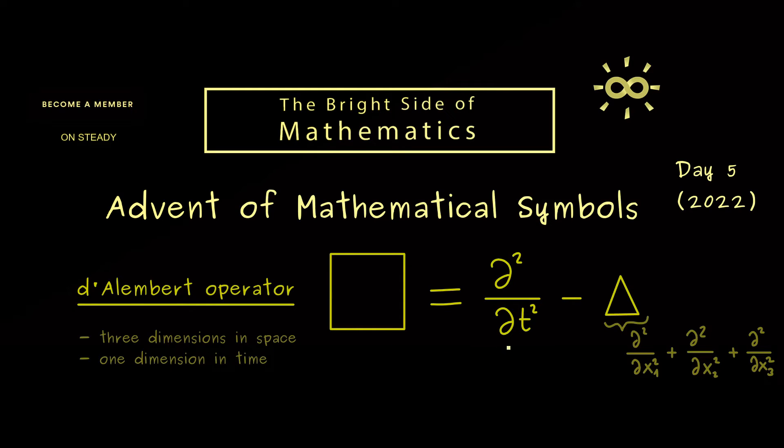For this reason, the units where we measure space and time should coincide and therefore the speed of light should occur somewhere. Indeed, often we just put it in front of the time derivative. So you find 1 over c squared there, where c stands for the speed of light.